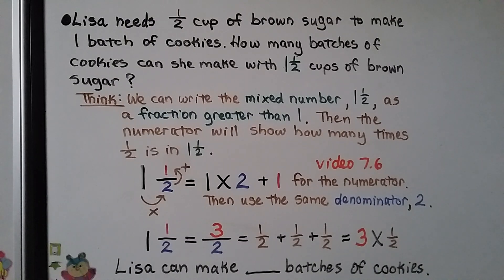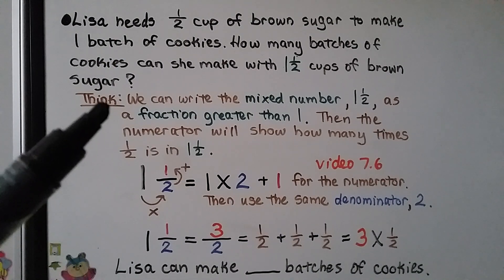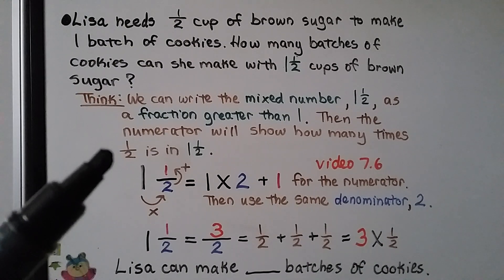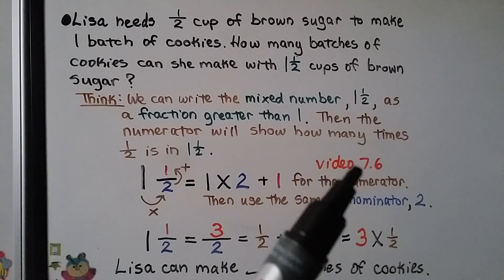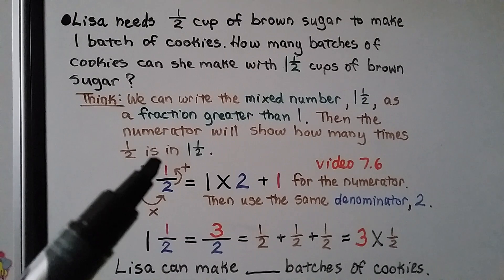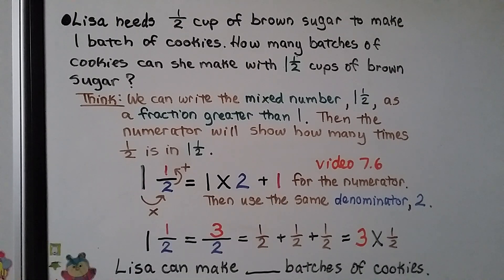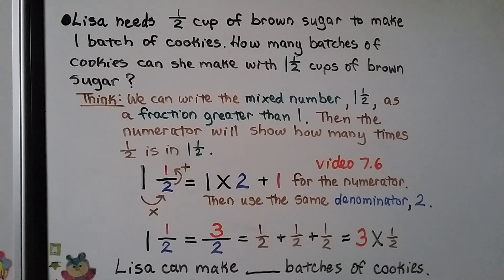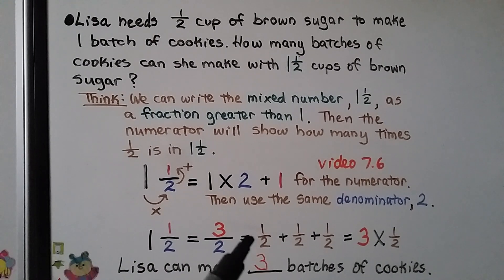Lisa needs half a cup of brown sugar to make one batch of cookies. How many batches of cookies can she make with one and a half cups of brown sugar? We can write the mixed number 1 and a half as a fraction greater than 1, then the numerator will show how many times 1/2 is in 1 and a half. We multiply the whole number by the denominator: 1 times 2 is 2. We add the numerator, giving us 3. 1 times 2 plus 1 equals 3 for the numerator, and we use the same denominator. So 3/2 equals 1/2 plus 1/2 plus 1/2, that's 3 times 1/2. How many batches can Lisa make? If you said 3, you're right — she can make 3 batches with 1 and a half cups of brown sugar.